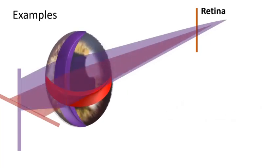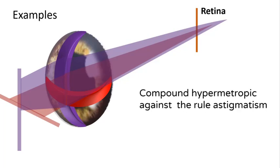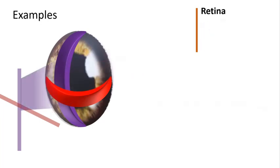Here again: no meridian focuses on the retina, so it's either compound or mixed. Step two, both focus on the same side, so it is compound; both behind the retina, so it is hypermetropic. Step three, the horizontal meridian is more myopic, so it is against the rule. This is a case of compound hypermetropic against-the-rule astigmatism.